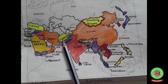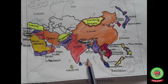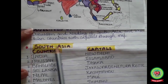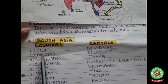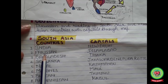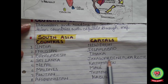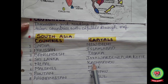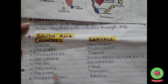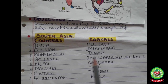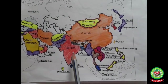Afghanistan — capital Kabul — officially the Islamic Republic of Afghanistan, is a landlocked country in South and Central Asia. It is famous for its pomegranates in Asia. So students, these are the eight countries of South Asia. You can revise them as follows: India–New Delhi, Pakistan–Islamabad, Bangladesh–Dhaka, Sri Lanka–Sri Jayawardenepura Kotte, Nepal–Kathmandu, Maldives–Malé, Bhutan–Thimphu, Afghanistan–Kabul.